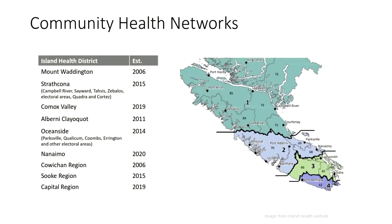For a bit of context, CHNs are geographically based groups consisting of tables of partners who represent different levels of government, local First Nations, NGOs, health business and education sectors and community members. This evaluation included six of the nine CHNs that are supported by Island Health.